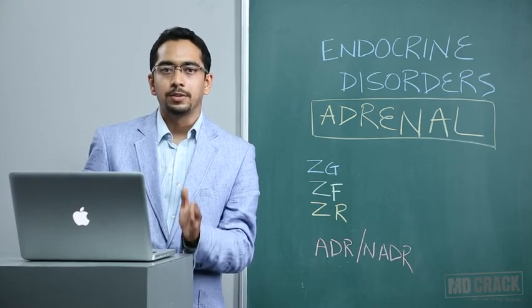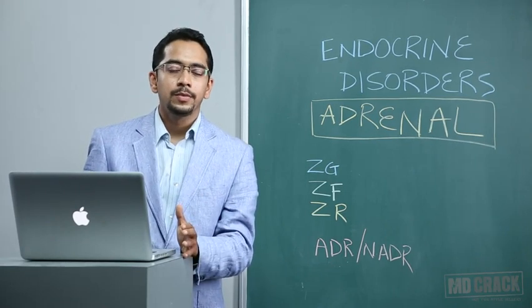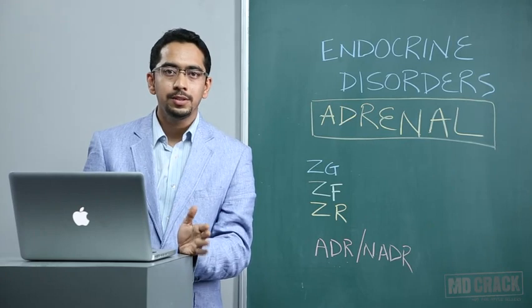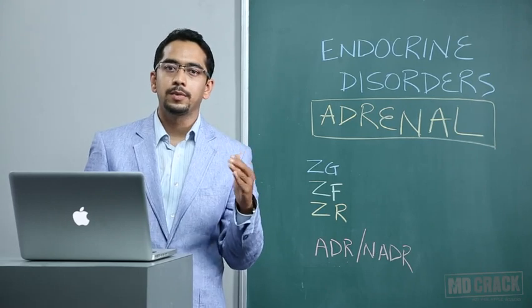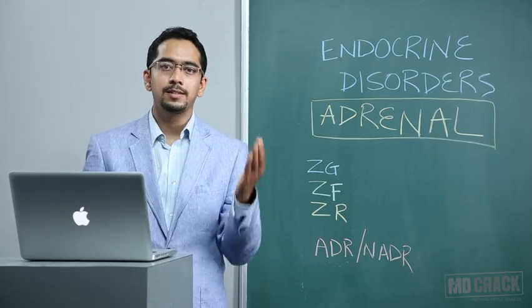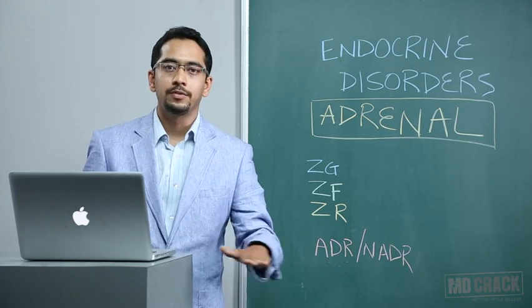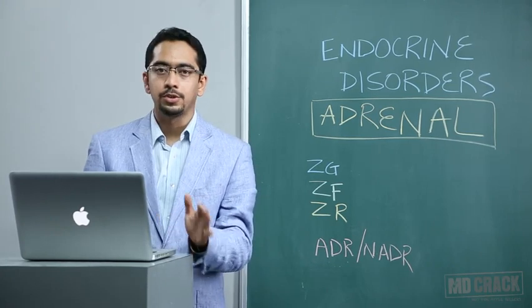Cortisol production is dependent on ACTH, so whenever we have hyper or hyposecretion of adrenal cortisol, we have to test the HPA axis. The first step is looking at the AM-PM variability in cortisol — the diurnal variation. In most adrenal disorders, be it Cushing's syndrome or Addison's disease, the diurnal variation is lost. Normally at 8 AM cortisol is at its peak due to high ACTH values in the morning, and around 11 PM there is a trough.